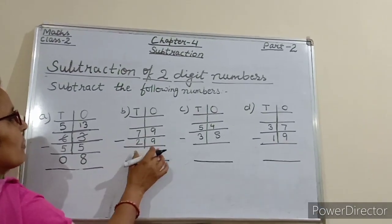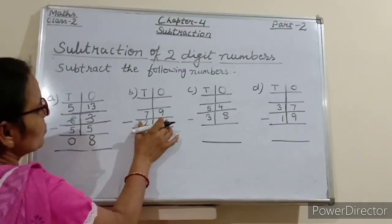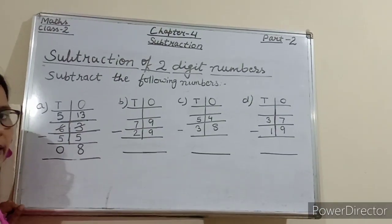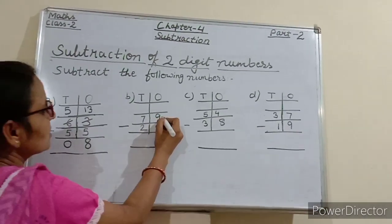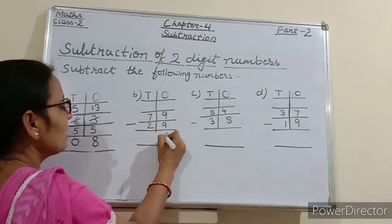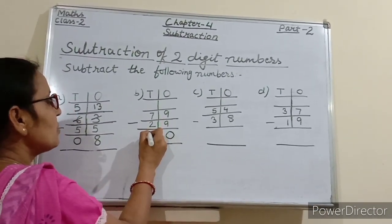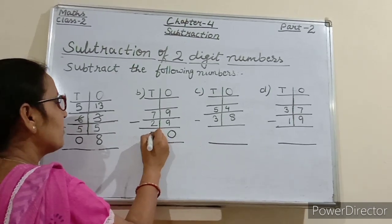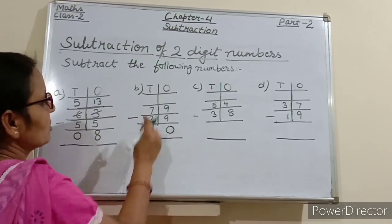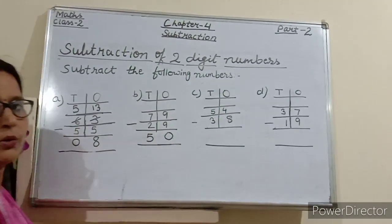Come to the next example. We have to subtract 29 from 79. So 9 minus 9 is 0. And 7 minus 2 is 5. So here we will write 5. So 79 minus 29 is equals to 50.